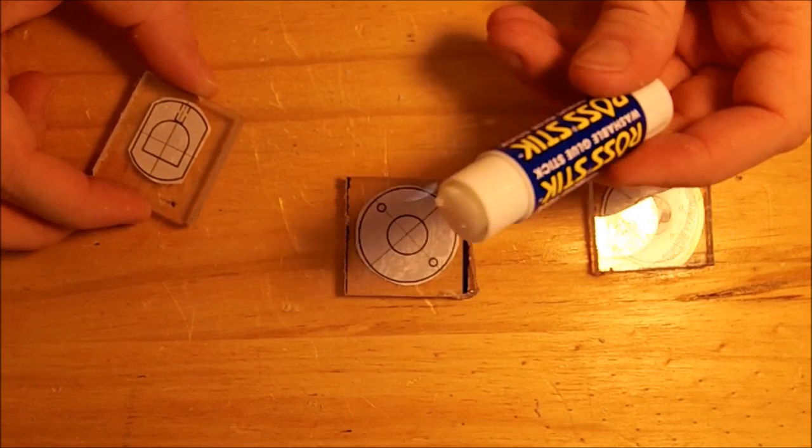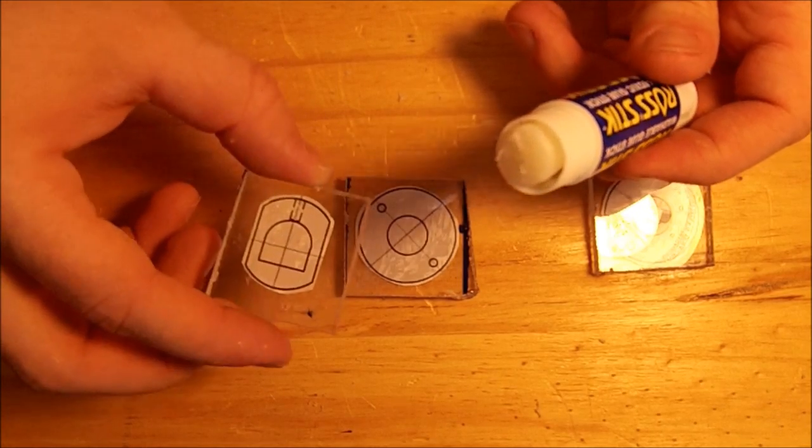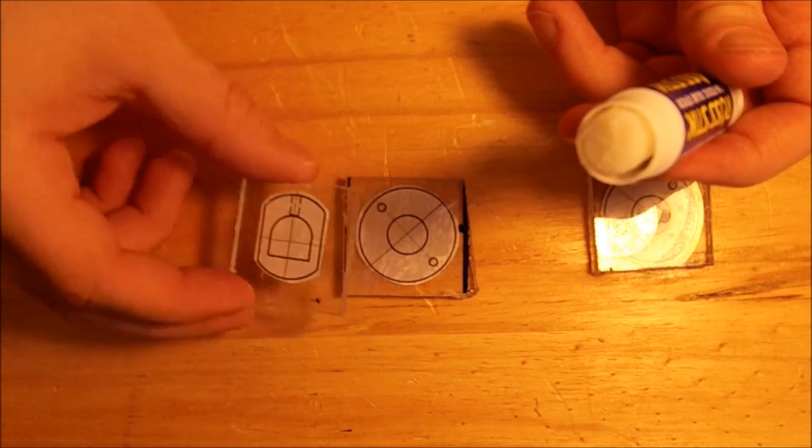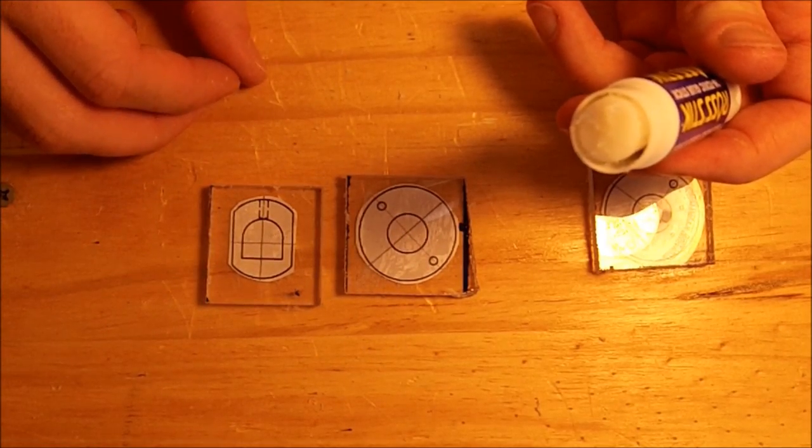We now have our three cut out templates. Next, using some simple glue, glue the templates onto the polycarbonate with the printed side facing inward. Allow them to dry for a few minutes.